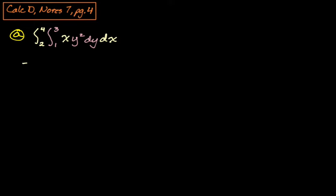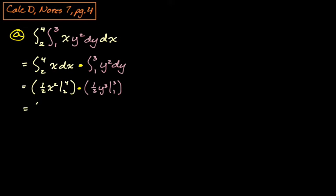So I'm going to start off by rewriting this thing as the integral of x from two to four times the integral of y squared from one to three. And now we're back in calc one. So plus one times the reciprocal, and we're going from two to four, plus one times the reciprocal, and we're going from one to three. So it's really nice, just reversing the power rule. Subbing in, we get (16 - 4)/2 times (27 - 1)/3. Doing some arithmetic, we end up at 6 times 26/3, which gives us 52 as our final answer.